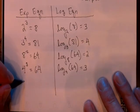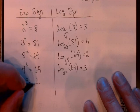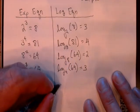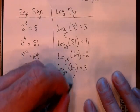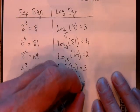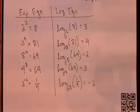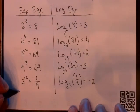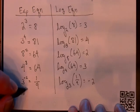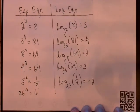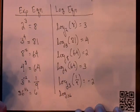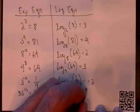How about something like this. 3 power negative 2 equals 1 ninth. We talked about negative exponents in an earlier video. So the equivalent log equation, log base 3 of 1 ninth equals negative 2. Let's do just one more. Let's say 36 power 1 half equals 6. The equivalent log equation is log base 36 of 6 equals 1 half.